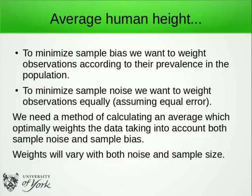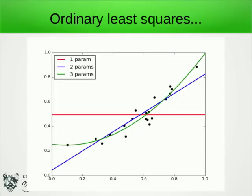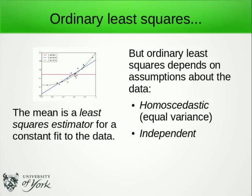How might that work? We can start with a technique we already know: ordinary least squares. The most common application is to fit a straight line through data, fitting two parameters — the mean and the slope. But we can also fit just one parameter — a constant — and it turns out that constant is mathematically identical to the mean of the data. So we can say that the mean is a least squares estimator for a constant fit to the data.